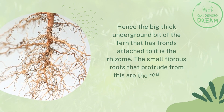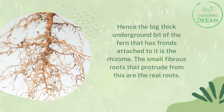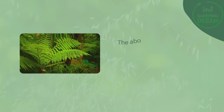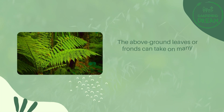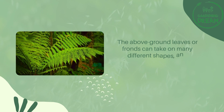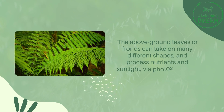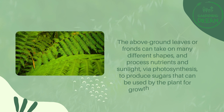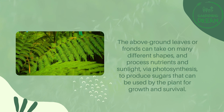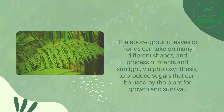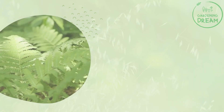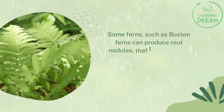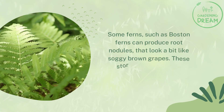The small fibrous roots that protrude from the rhizome are the real roots. The above-ground leaves, or fronds, can take on many different shapes and process nutrients in sunlight via photosynthesis to produce sugars used by the plant for growth and survival.